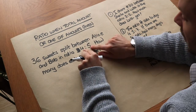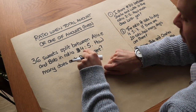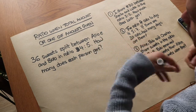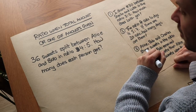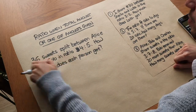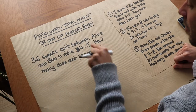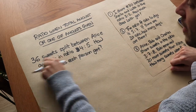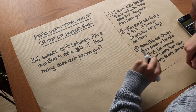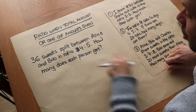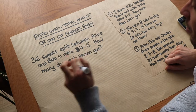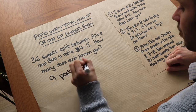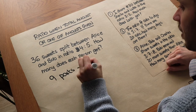We can think of each of these numbers within the ratio as a certain number of parts. So this represents 4 parts and that represents 5 parts. We want to work out what 1 part is so we can subsequently work out the answer. The 36 sweets is the total amount, so it represents the total number of parts. And 4 plus 5 gives you 9 parts, so 9 parts represents 36 sweets.